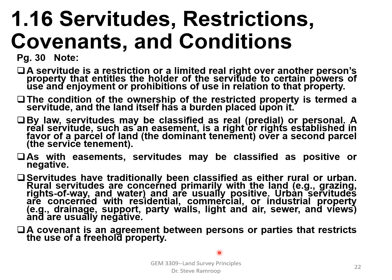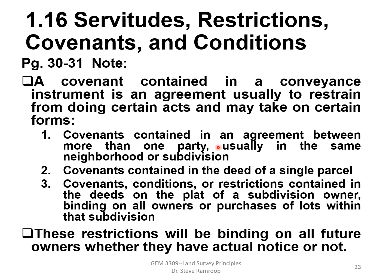Urban servitudes are concerned with residential, commercial, and industrial properties and are usually negative — for example, drainage, support, party walls, light and air, sewer, and views. A covenant is an agreement between persons or parties that restricts the use of a freehold property. A covenant contained in a conveyance instrument — a deed — is an agreement usually to restrain from doing certain acts. Covenants can take three forms: an agreement between more than one party in the same neighborhood or subdivision; covenants in the deed of a single parcel; and covenants and conditions or restrictions in the deed or the plat of a subdivision, binding all owners.